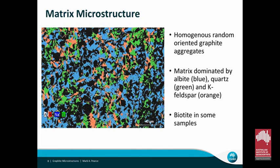Looking in more detail using SEM-based chemistry showing microstructure — in all these images the graphite is shown as black. This is the background matrix microstructure with albite feldspar shown in green, biotite and K-feldspar in orange, and quartz in green. You can see the distributed nature of the graphite throughout the matrix, forming a network through the gangue mineralogy. This interconnected network seems to be what gives the deposit its unique conductive properties.